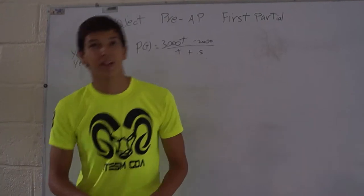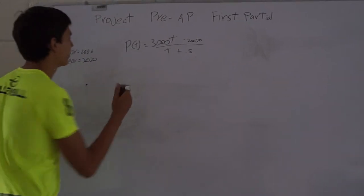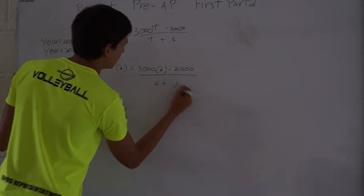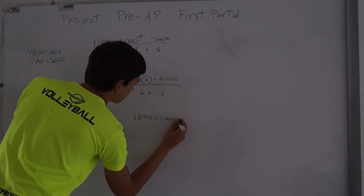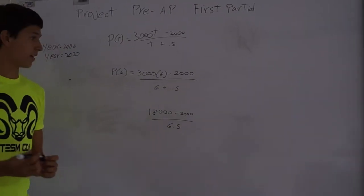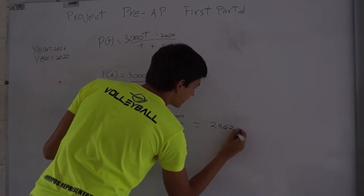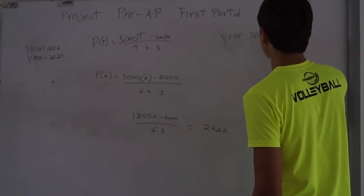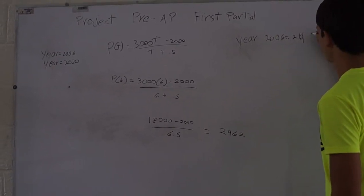Now you have to find the population in 2006. Here we go. First we have to use T equals 6. So in the year 2006, there was a population equal to 462.